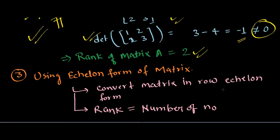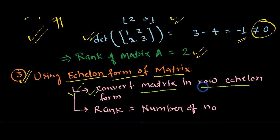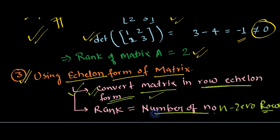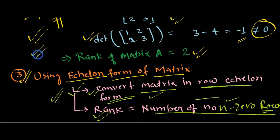Our third method is by using the Echelon form of the matrix. This is actually the simplest one and most mathematicians use this method. First, convert the matrix into row Echelon form. Then the number of non-zero rows you get in that row Echelon form will be the rank of your matrix. I hope things are clear and you can easily find the rank using any of these three methods.